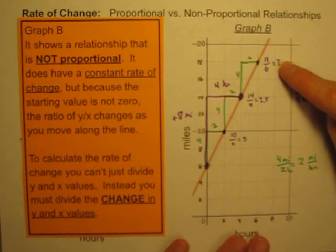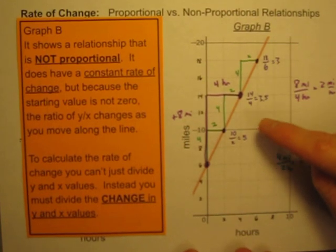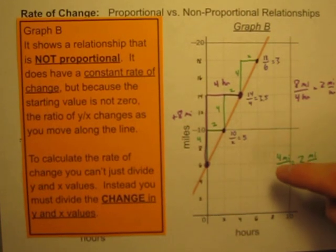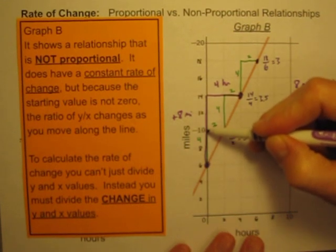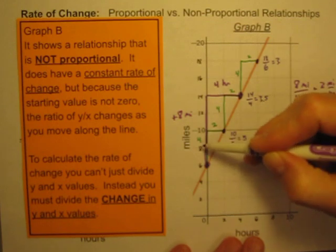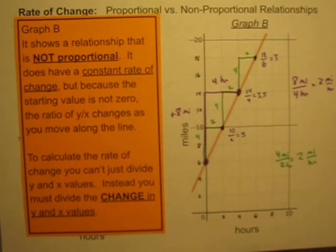So to calculate rate of change, I can't just divide y and x values. Instead, I have to divide the change in the y and x values. Y changes by four, x changes by two, four divided by two gives me my rate of change.